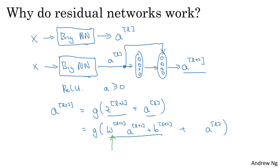If you're applying weight decay to B, that will also shrink this. Although in practice, sometimes you do and sometimes you don't apply weight decay to B. But W is really the key term to pay attention to here. And if WL plus two is equal to zero, and let's say for the sake of argument that B is also equal to zero, then these terms go away because they're equal to zero. And then G of AL, this is just equal to AL.